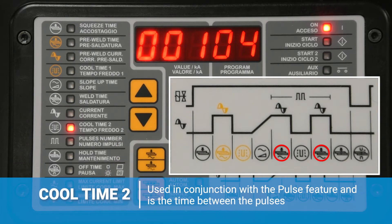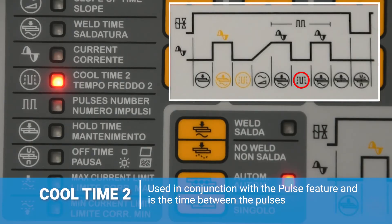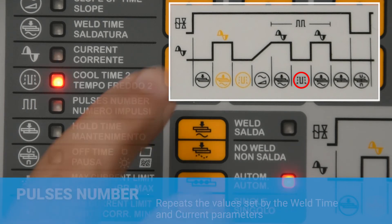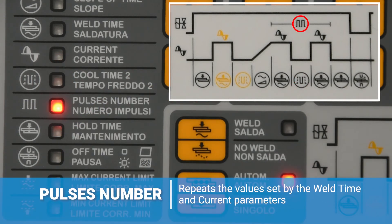Next, we have cool time 2, or the second cool time, and this is used in conjunction with the pulse feature. This is the time between pulses and can be set between 1 and 50 cycles. The next parameter is pulses number, or number of pulses. The TE101 can be set between 0 and 9 pulses. When set to 0, no pulsing will occur.